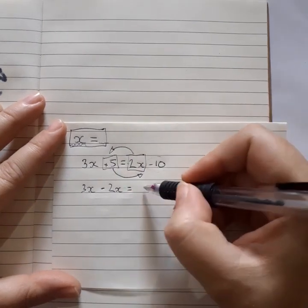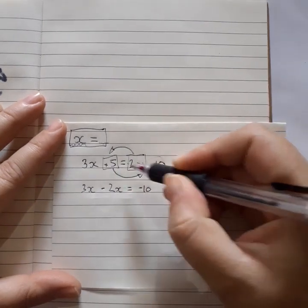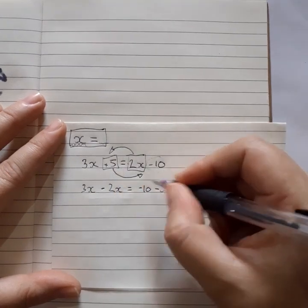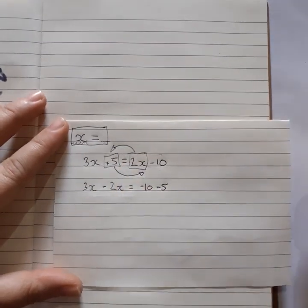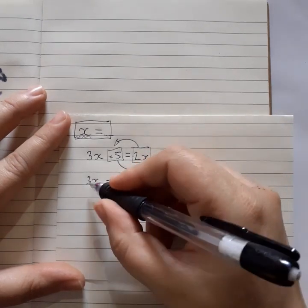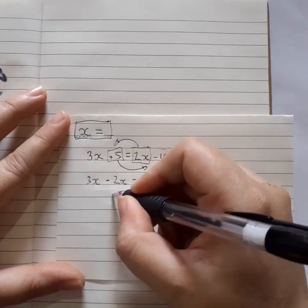Always first write what we have. And then write what we moved. It was positive here, so it becomes negative here. So now we've got 3 minus 2 is 1.